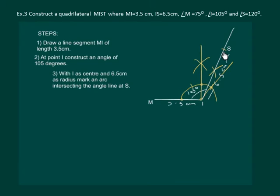And now we have to construct a 120 degree angle on S. So now with S as center, draw a curve and mark two arcs without disturbing the compass.